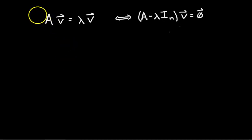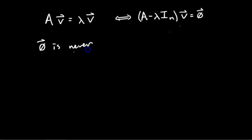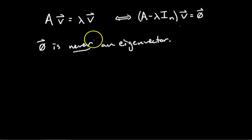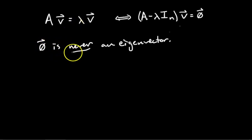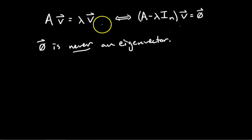Quick note: the zero vector is never an eigenvector. Technically it's trivial — if you plug in the zero vector for V, you get A times zero equals lambda times zero, which gives zero no matter what you pick for lambda. So the zero vector would have infinitely many eigenvalues, which doesn't make sense. We say the zero vector is never written as an eigenvector because that's trivial.